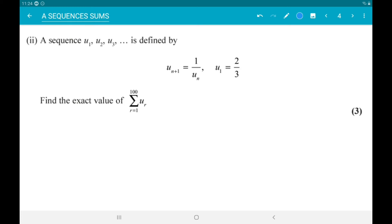A sequence u1, u2, u3 is defined by u sub n plus 1 equals 1 over u sub n. So if u1 is two thirds, u2 is one over two thirds, which is three halves. Now that means u3 is one over three halves, so that's two thirds.